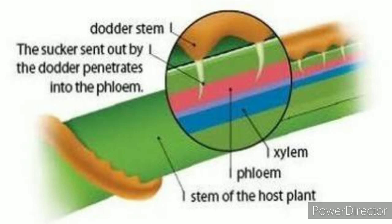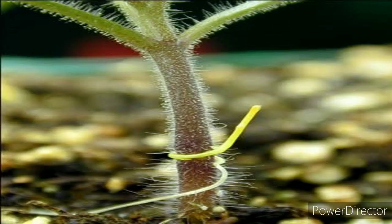It is really interesting that the original root of the dodder plant dies once it forms a connection with the host plant. As it grows, it sends new haustoria.